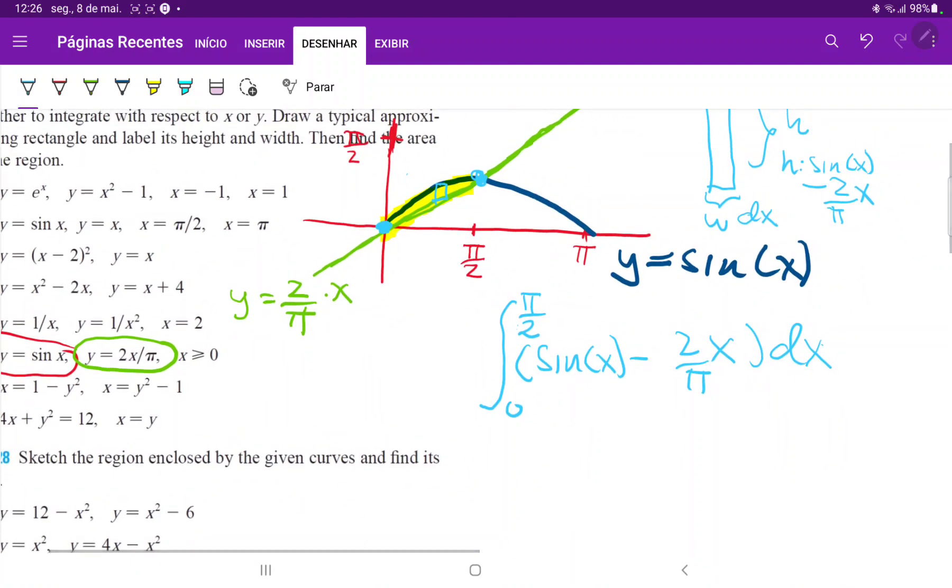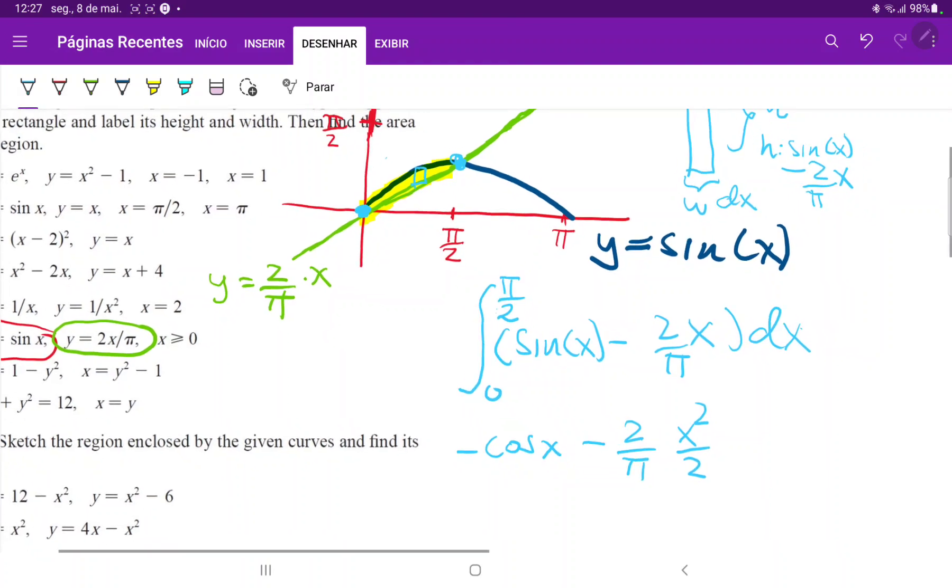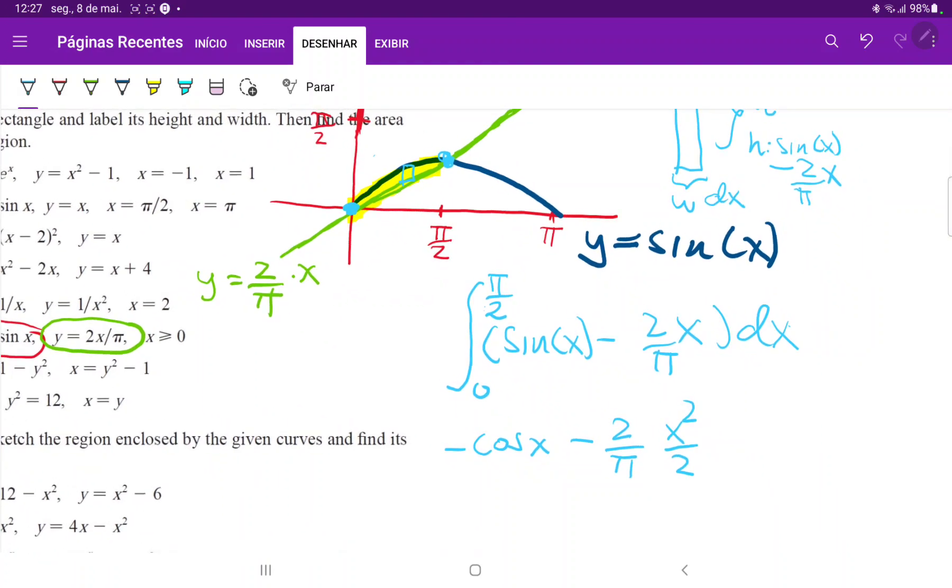So now we just need to integrate this. This is fairly straightforward. The integral of sine of x is just negative cosine x, and then this one would be just minus 2 over pi times x squared over 2. So now we just clean this up a little. This is just minus cosine x, and then this is minus x squared over pi, and all of this evaluated from 0 to pi over 2.